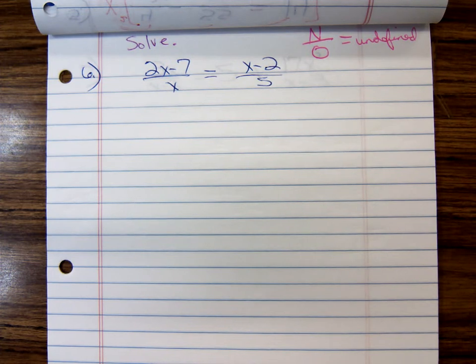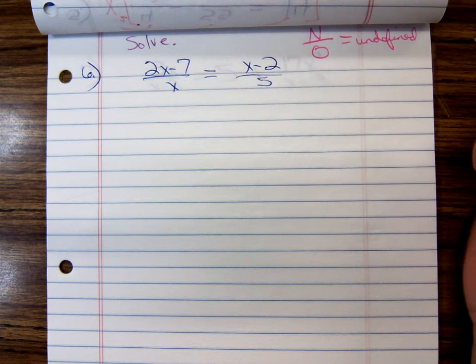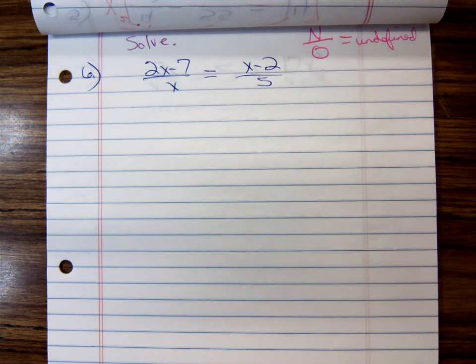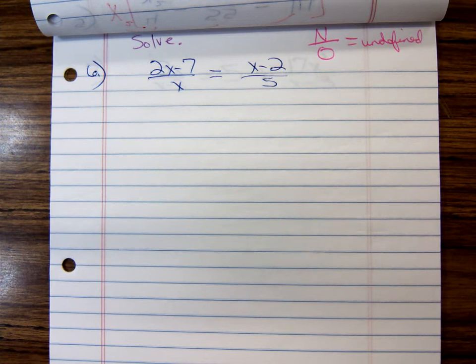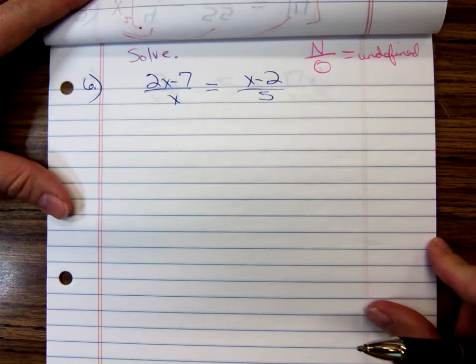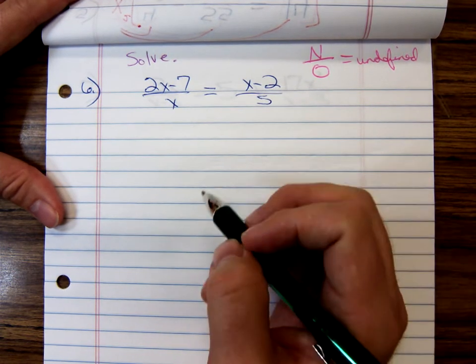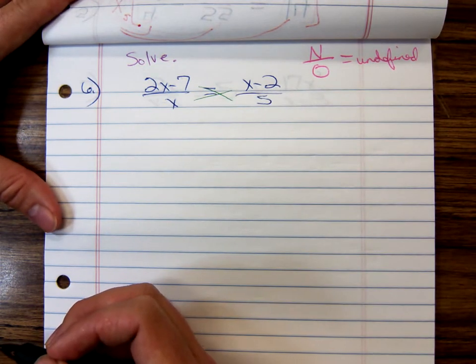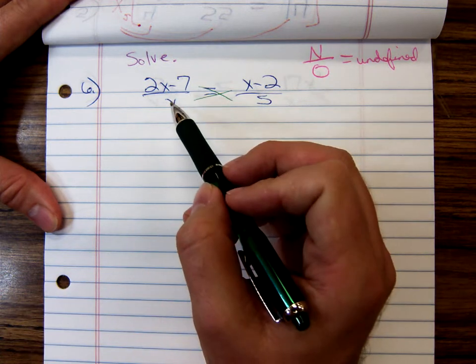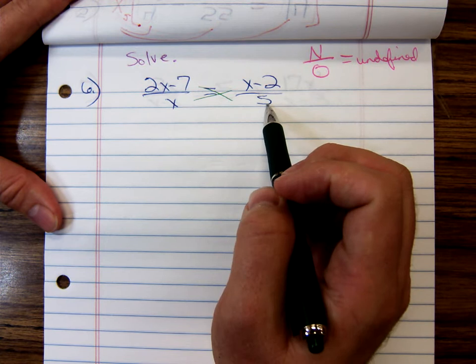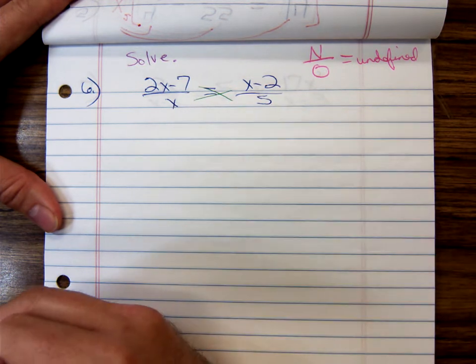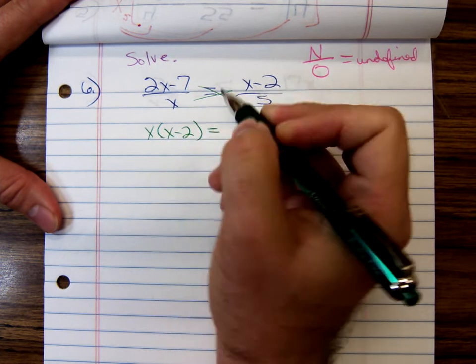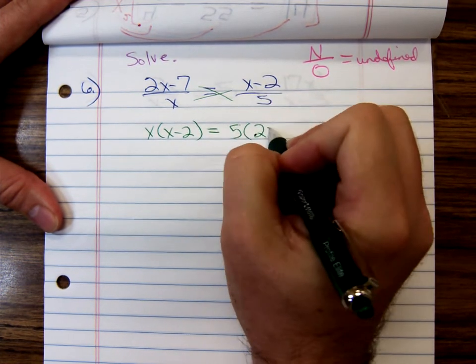Rather than multiplying both sides by the least common denominator the way we were doing the last time, when you have one fraction equaling another fraction, that's called a proportion. And, you would have seen a way of solving proportions back in your previous math classes. So, how are we going to solve this? I'm going to use the trick of cross-multiplying. Y'all remember seeing that somewhere? I only do this when the equation's in the form one fraction equals another fraction. You take the numerator times the denominator on the other side equals the denominator times the numerator on the other side. So, we have, I'll take the x times x minus 2 is equal to 5 times the 2x minus 7.